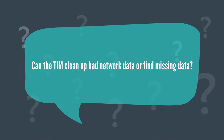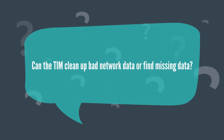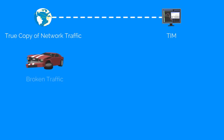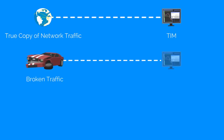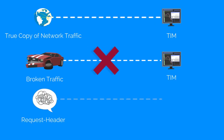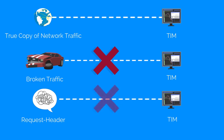Now that we understand what clean network traffic means, let's discuss if the TIM can clean up bad network data or find missing data. The TIM needs a true copy of network traffic for accurate monitoring and reporting. When the TIM receives broken traffic and cannot see the request header, it ignores the conversation. If the TIM sees the request header but only part or none of the response header, the TIM generates a defect.